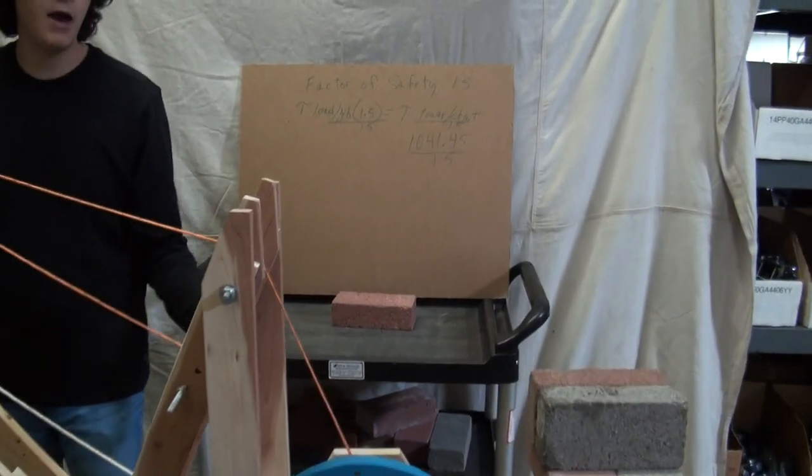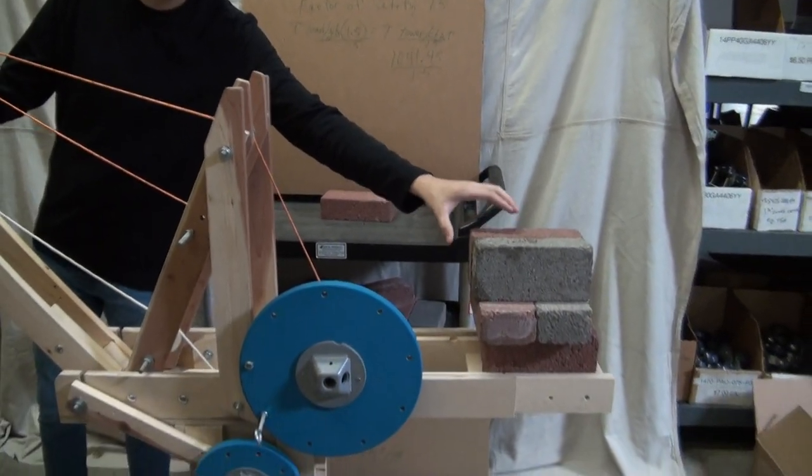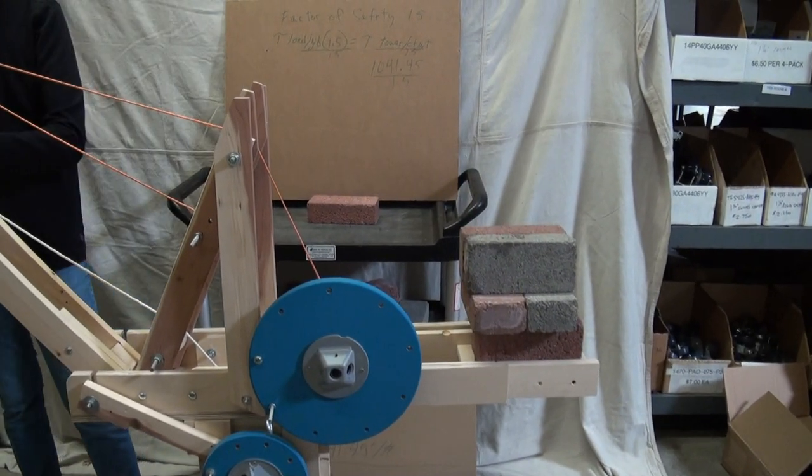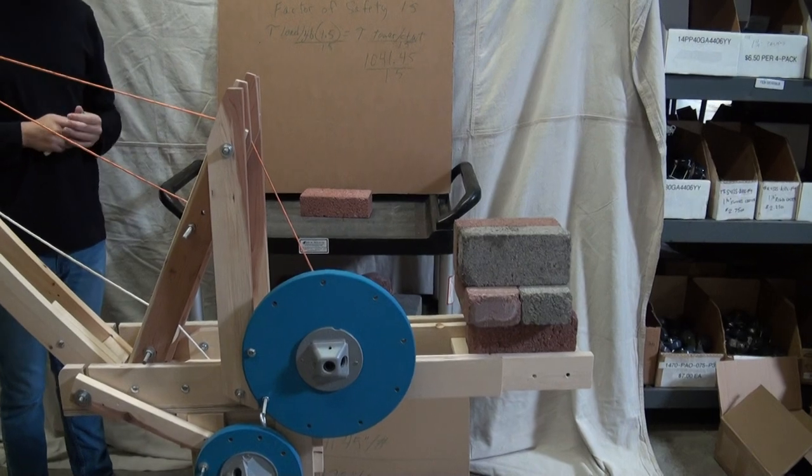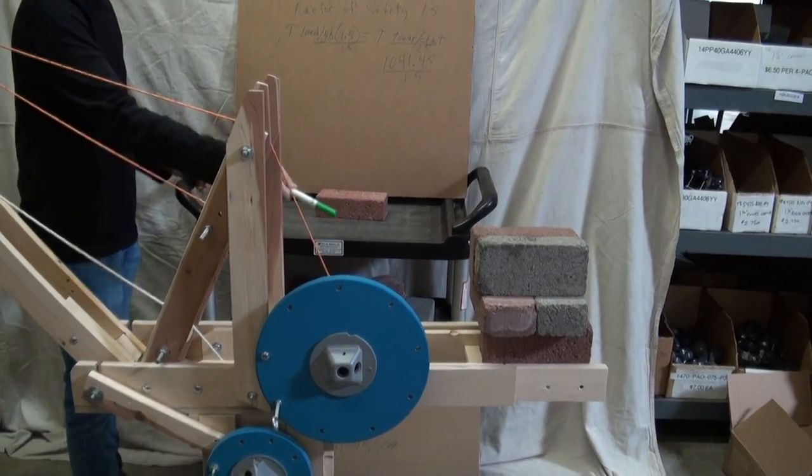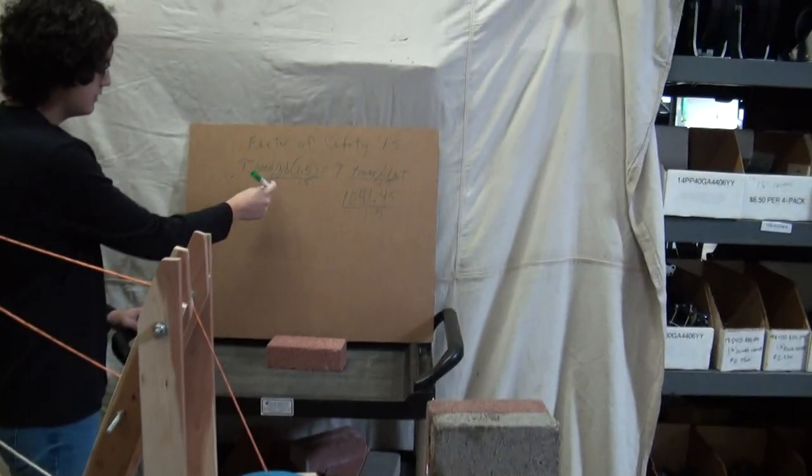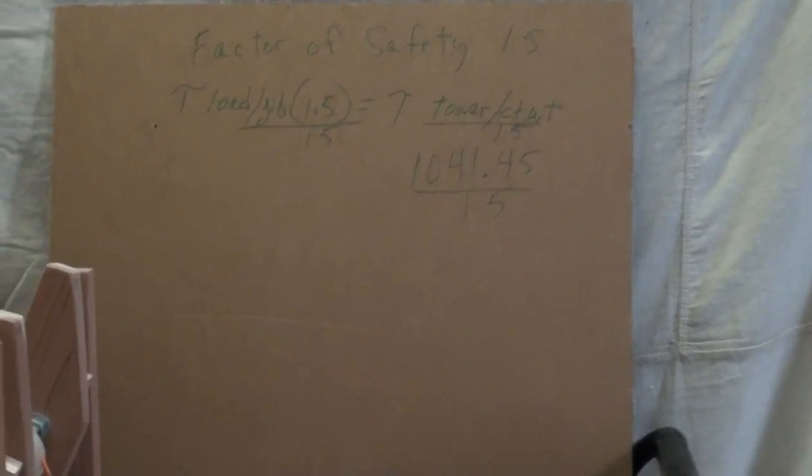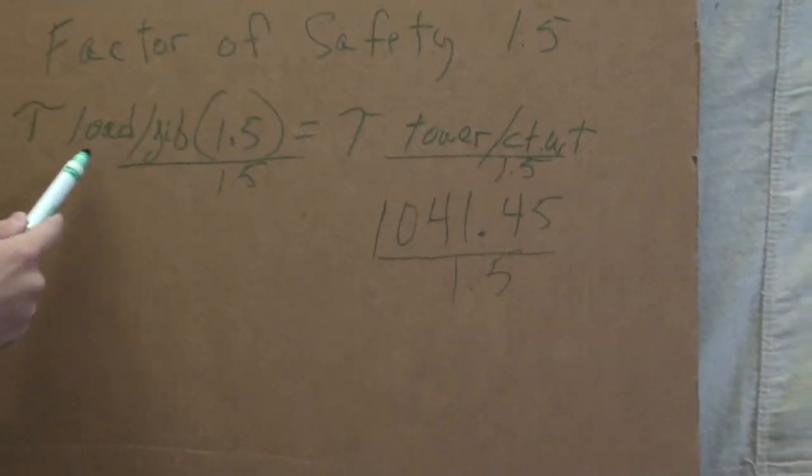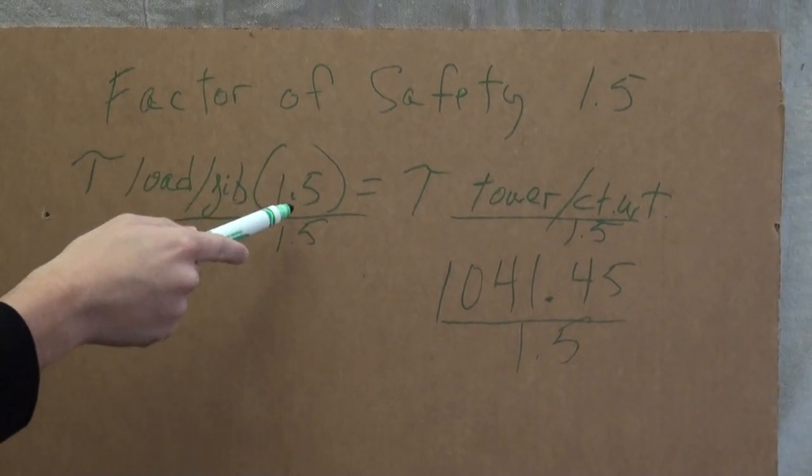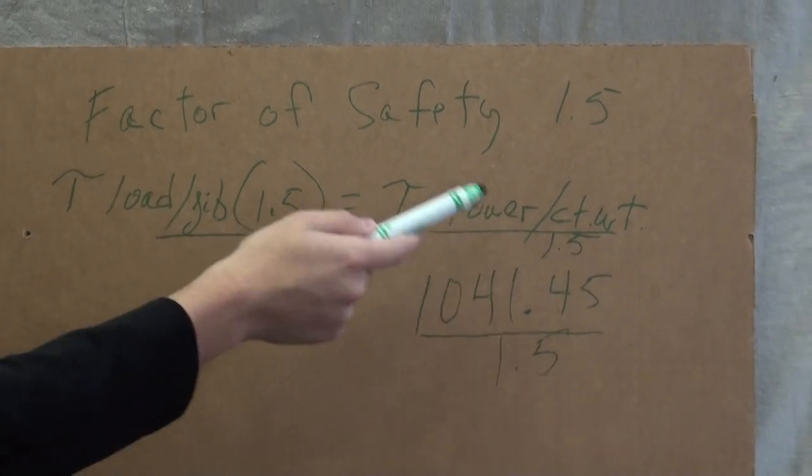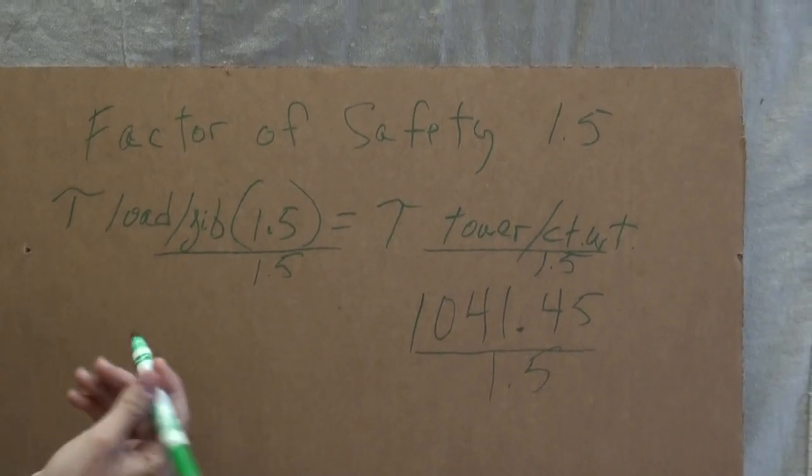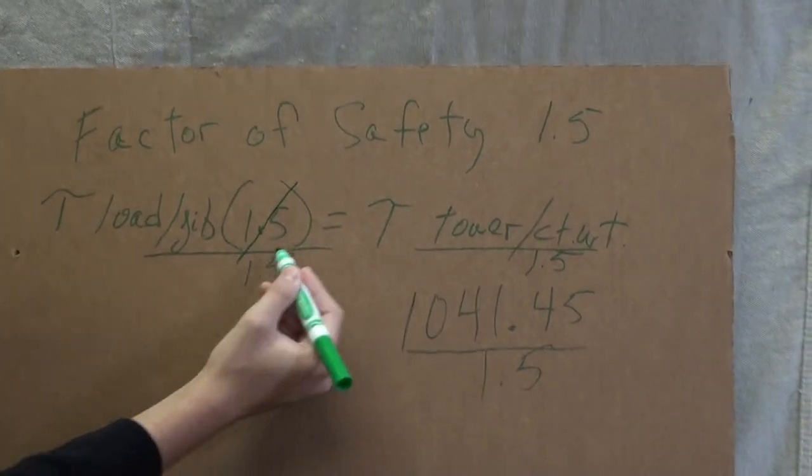And conversely, if we knew how much counter weight we had, we would just divide by 1.5 to get the other side. If we had the total torque of the tower, which we do, and that is 1041. If we knew what the torque of the load and jib was, we'd multiply it by 1.5, and that'd get us our tower torque. But since we don't know that, we actually divide by 1.5, and those two cancel out. We divide this side by 1.5 because you have to do the same thing to both sides of the equation.